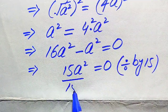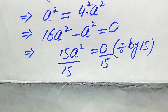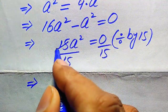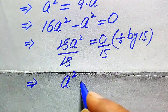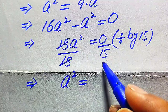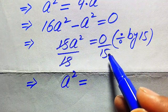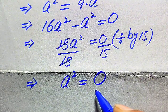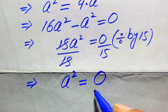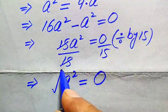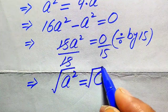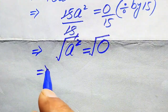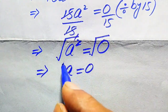Dividing both sides by 15, the 15 cancels on the left and we get a² = 0/15, which is a² = 0. Taking the square root of both sides, the square and square root cancel and we get a = 0.